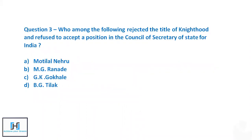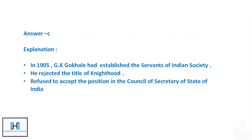Question 3: Who among the following rejected the title of knighthood and refused to accept a position in the Council of the Secretary of State for India? Options are Motilal Nehru, Mahadev Govind Ranade, Gopal Krishna Gokhale, or Bal Gangadhar Tilak. The correct answer is Gopal Krishna Gokhale. In 1905, he rejected the title of knighthood and refused the position, saying 'I will not remain Gokhale if I accepted this position.' He is also known as the political mentor of Mahatma Gandhi.